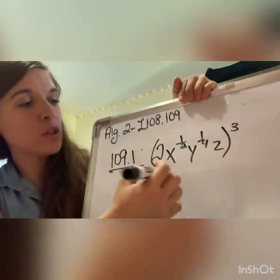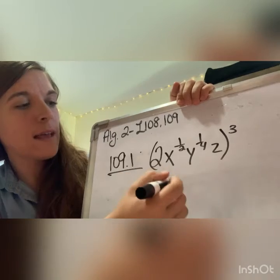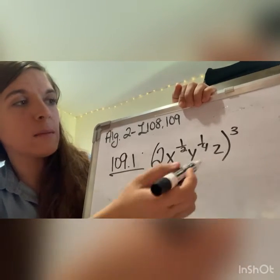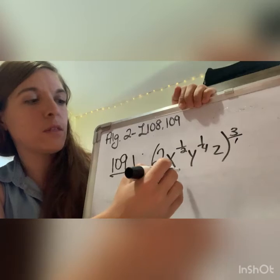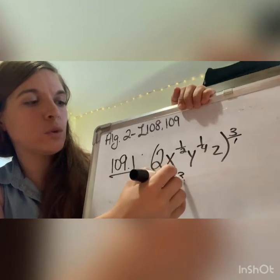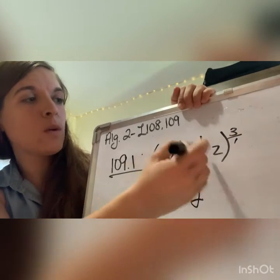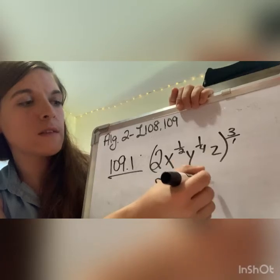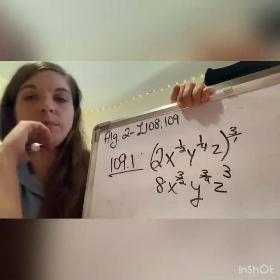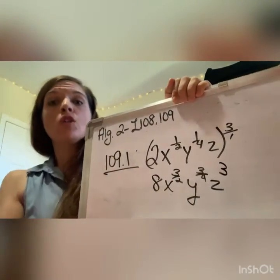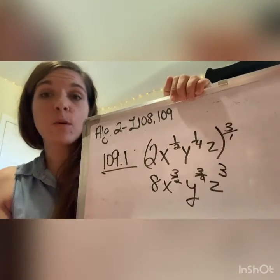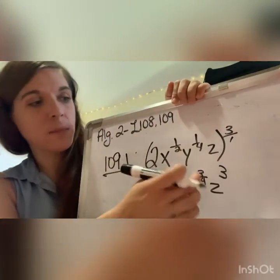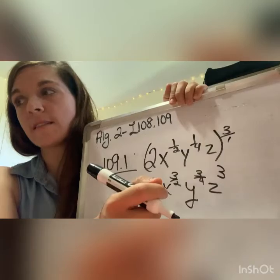Two to the third is 8. One half times three is three over two. y to the one fourth times three over one is three fourths, and z to the third. Just remember to distribute that exponent to each one of the elements inside the parentheses.